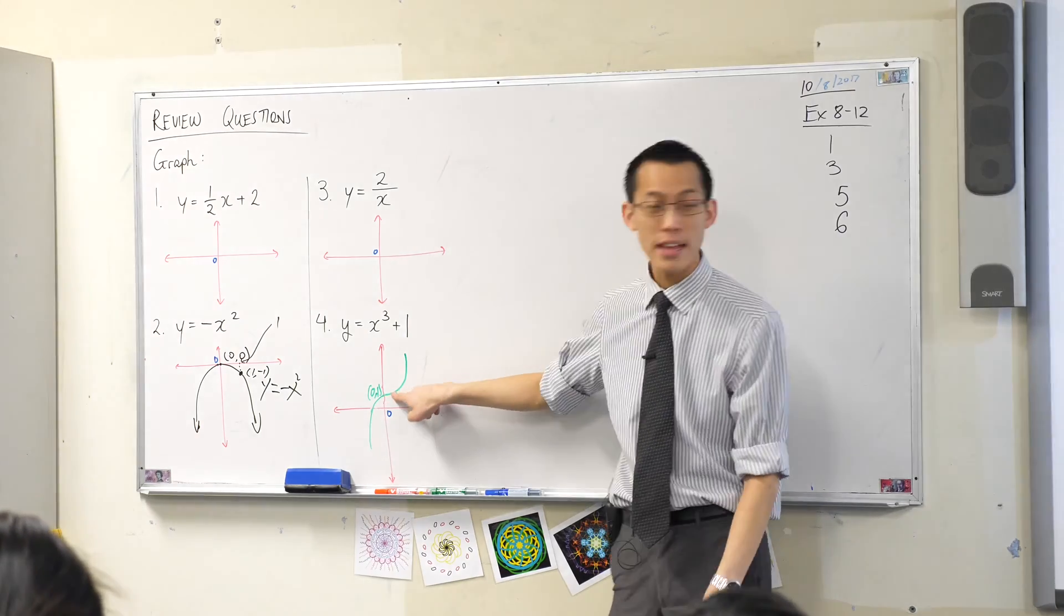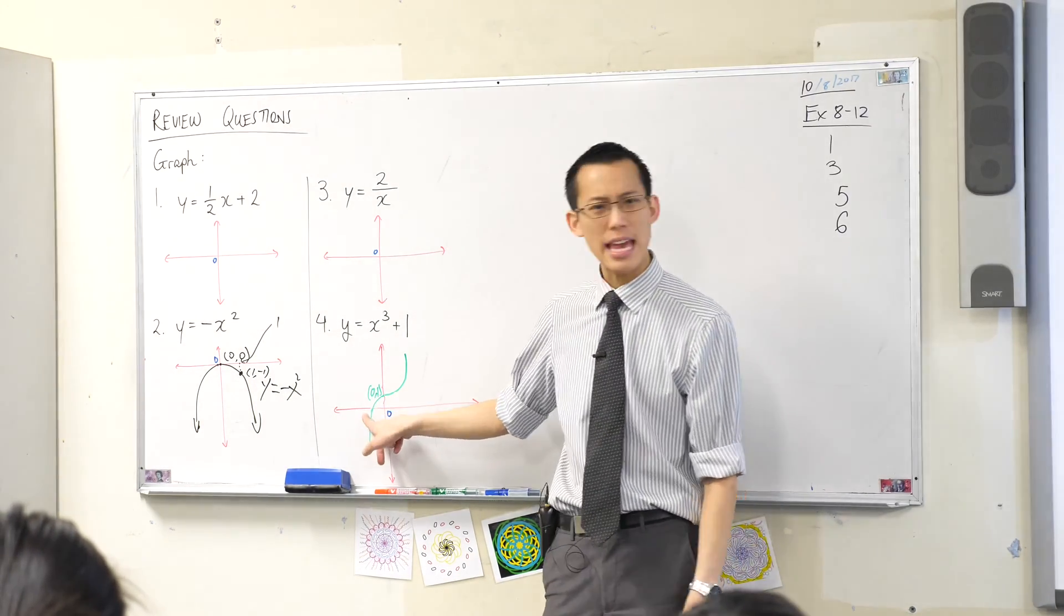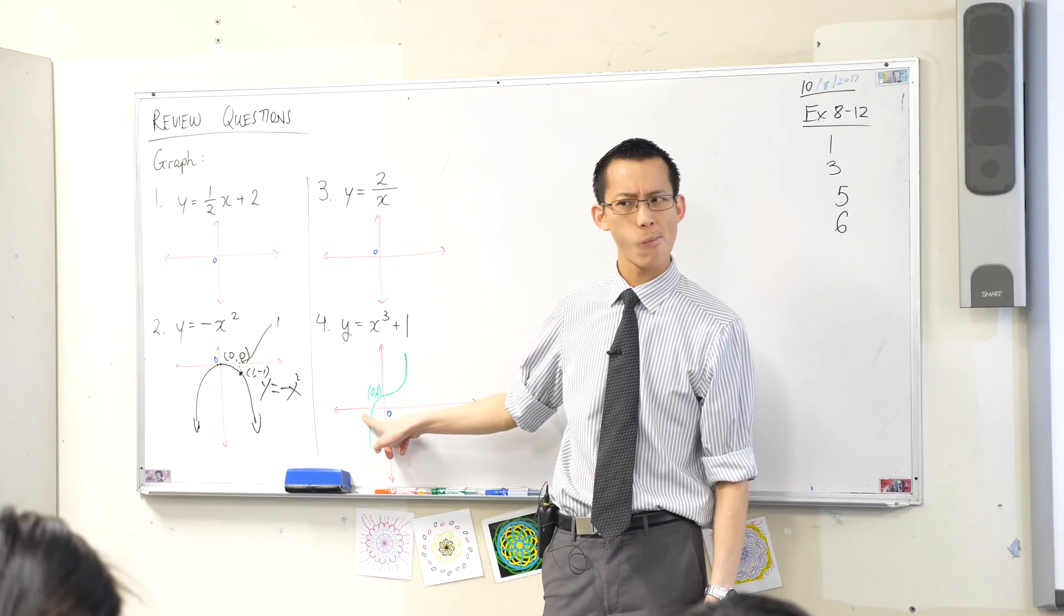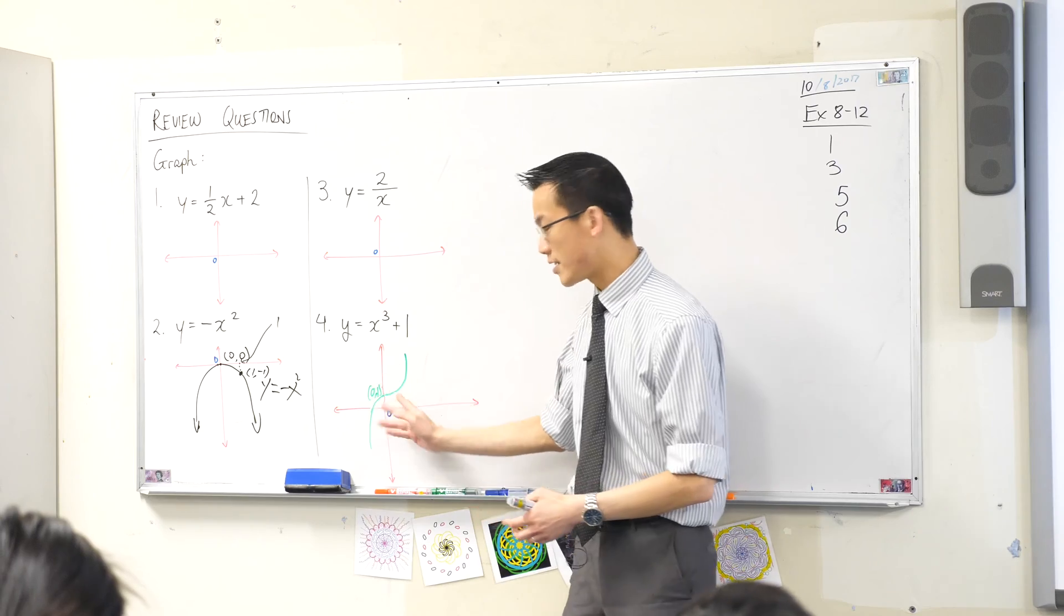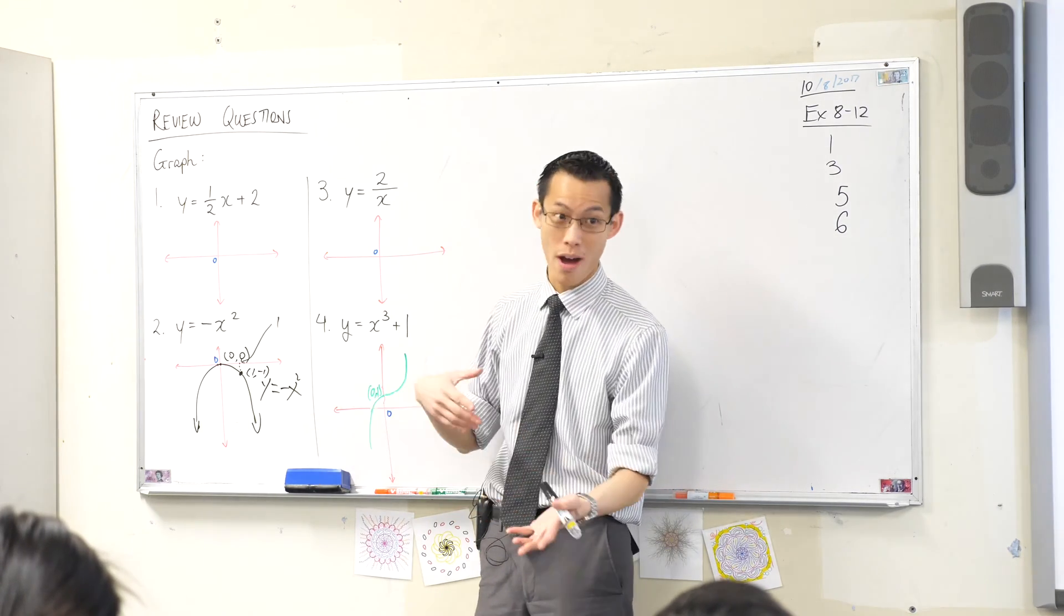I notice we have the y-intercept there, 0, 1, thumbs up. We need the x-intercept though. How do I find out the x-intercept? To find the y-intercept you make x equals 0. To find the x-intercept you make y equals 0, okay?